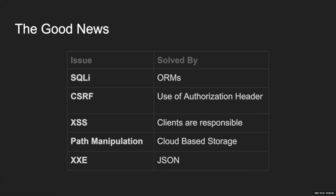These changes lead to some good news and bad news. Starting with the good news: things like SQL injection, cross-site scripting, and XXE are much less common in APIs, just because of the way that applications are built today.